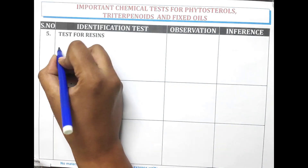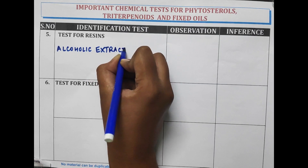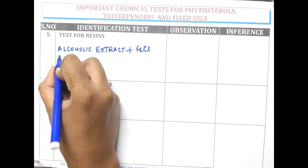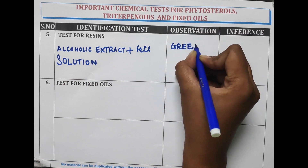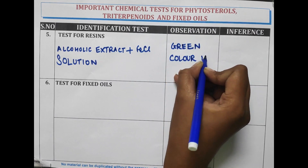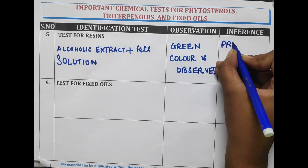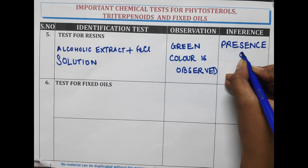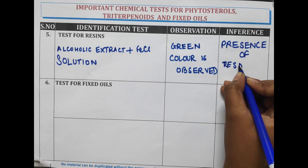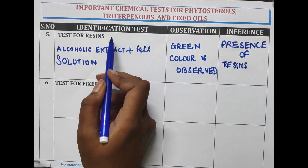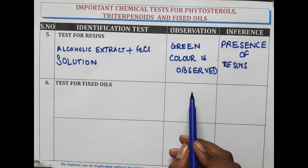Test for resins: alcoholic extract of the drug is added to ferric chloride solution. A green colour is observed, indicating the presence of resins.